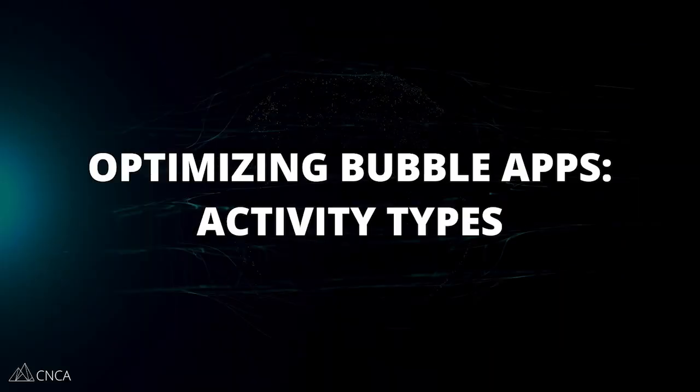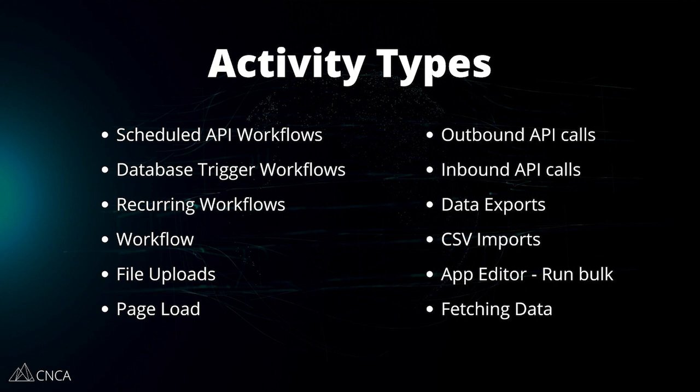Let's dive into the key areas to focus on to optimize your app's workload, starting with activity types. Activity types are essentially categories of possible activities your app can experience. Each has a base workload unit cost, and most app operations are a combination of several activities with varying degrees of complexity — the more complex, the more workload units you'll need. For example, creating a new database record with conditions, search operations, and constraints would cost more than creating a new record with no conditions, no searches, no mapped fields. Bubble is doing extra work for actions that also need to run conditions, do extra database queries, and apply filters.